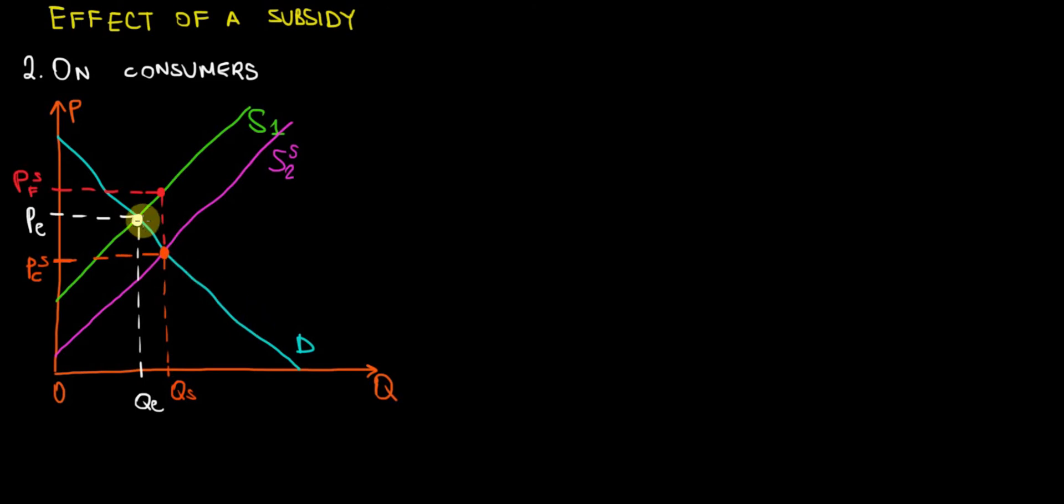The initial equilibrium is at this white dot PE and QE. Our original supply curve is shown by this green line and the purple one is the shift in the supply curve by the amount of the subsidy. Initially, consumers were paying the equilibrium price for this equilibrium quantity.